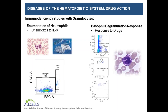Another assay with granulocytes involved stimulating basophils from donor whole blood and screening their response to IgE. The activated phenotype is determined with markers CD123, CD63, and HLA-DR. Our client then went on to select specific donors with certain responses for immunodeficiency drug studies.